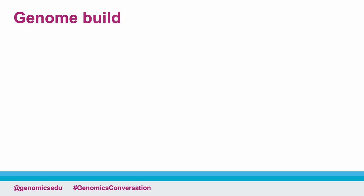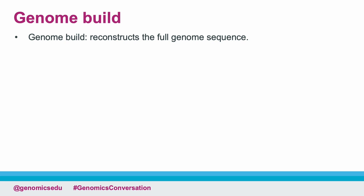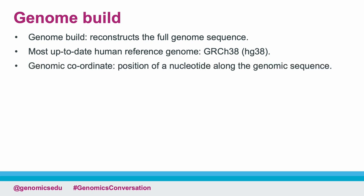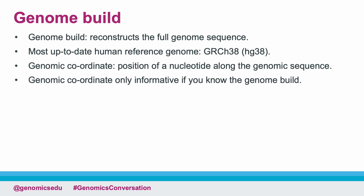So we've covered numbering at the gene transcript level, but how is the position of a variant described in terms of its position in the genome? First, let's look at genome builds. A genome build is an attempt to reconstruct the full human genome sequence. The human reference genome is updated all the time to represent advances in understanding. The most up-to-date genome build currently is labelled GRCh38, also known as HG38. GRCh38 has superseded the previous version, GRCh37, also known as HG19, which was subject to sequencing gaps and artefacts. The genomic coordinate is the name given to the position of a particular nucleotide along the genomic sequence at a given chromosome. As it is the genomic sequence and not coding or non-coding DNA, it is not subject to RNA splicing. However, the numbering of a genomic coordinate will shift as a result of the chopping and adding of the sequence in the different builds. Therefore, the genomic coordinate is only informative if you know the genome build on which it is based.